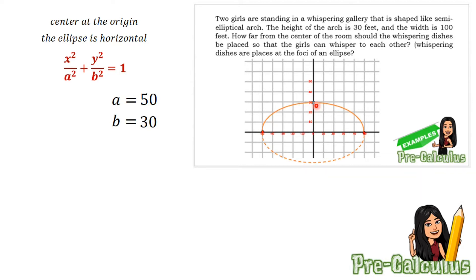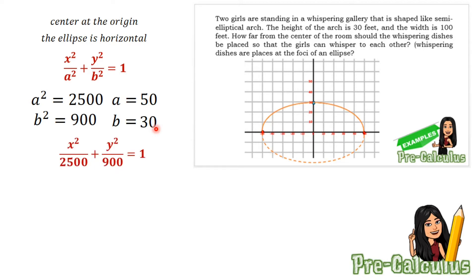So if we are to get the value of a² and b², we need to square 50 and 30. We will have a² = 2,500 since 50² = 2,500, and b² = 900 since 30² = 900. So the standard form of equation of this problem will be x² over 2,500 plus y² over 900 equals 1.